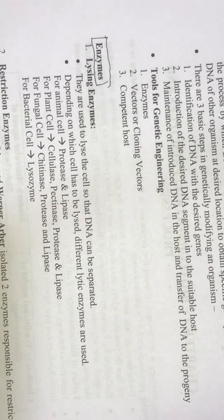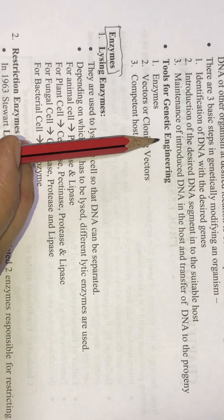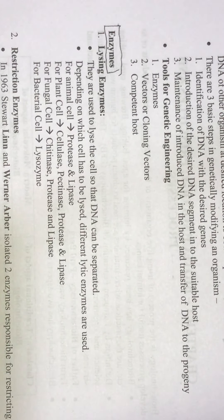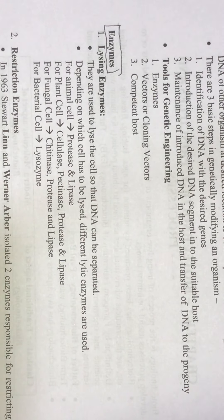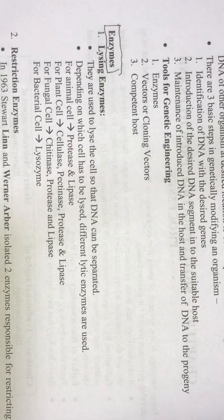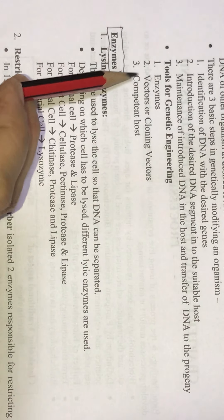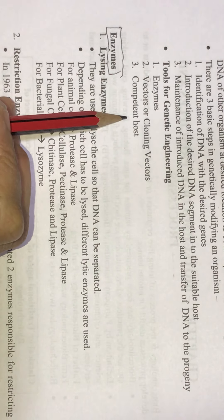There are mainly three tools of genetic engineering. Think of it like a tailor needing scissors, a machine, and thread. Similarly for genetic engineering: tool number one is enzymes, tool number two is vectors (also known as cloning vectors), and tool number three is the competent host.